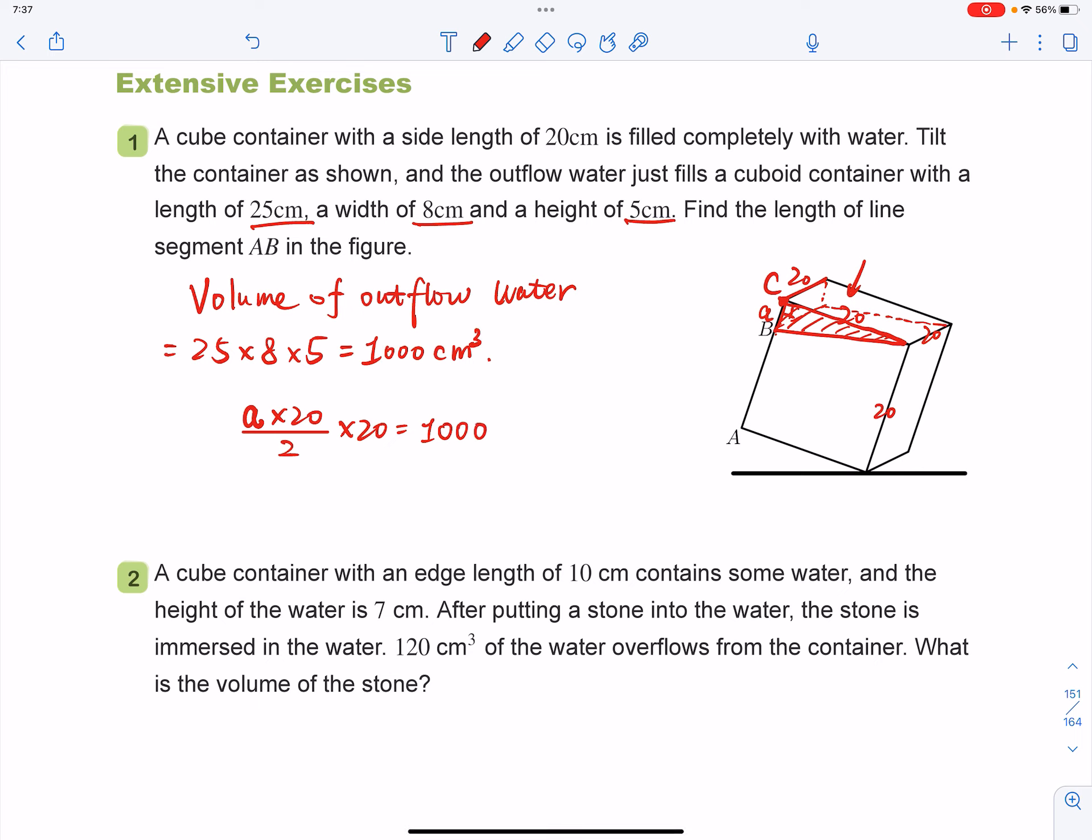Now let's see what is A. And you will see that 20 times divided by 2, you got 10. So that will be A times by 200 equals to a thousand, means A equals to 5 centimeters.